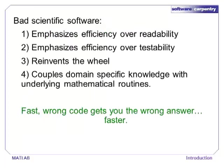Contrast good code with bad code. Bad code is hard for humans to read. It emphasizes small efficiency gains over human readability and testability. Often, it re-implements functions that have already been written and tested by someone else. Also, it can be hard to find the domain-specific algorithm among all of the low-level, secondary routines.